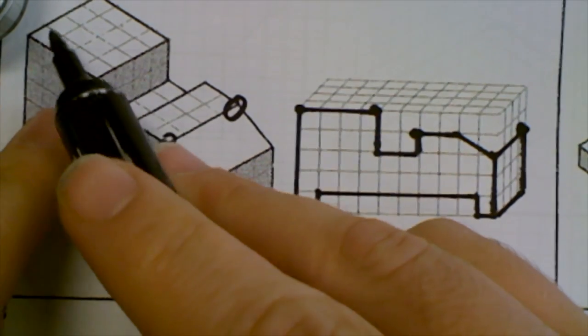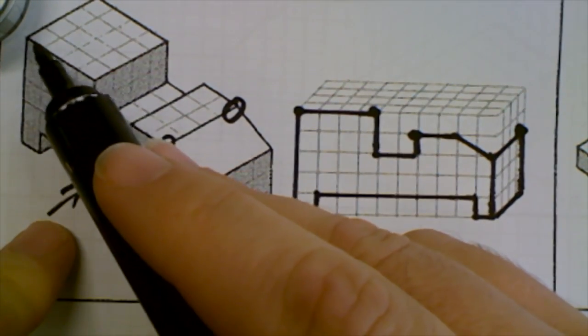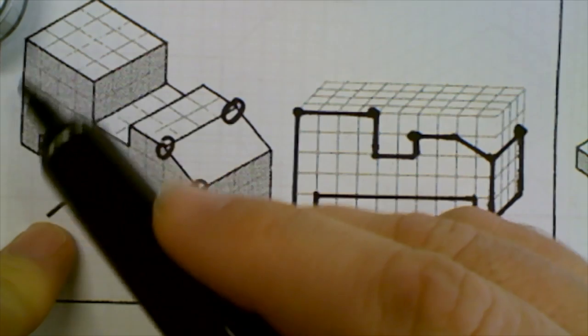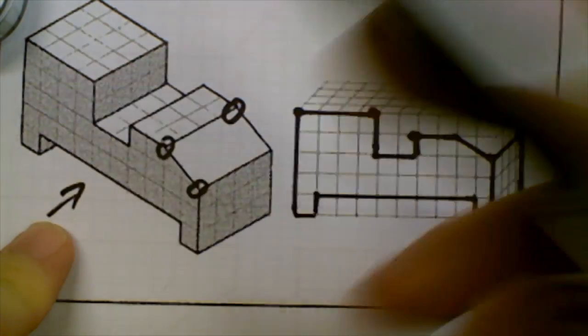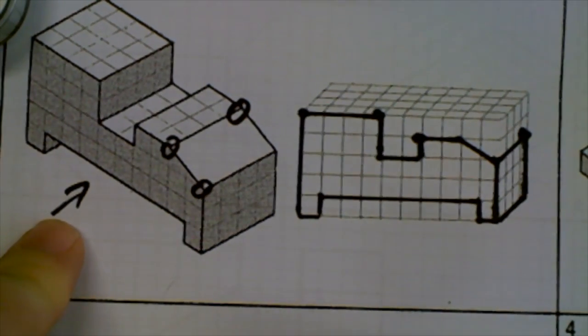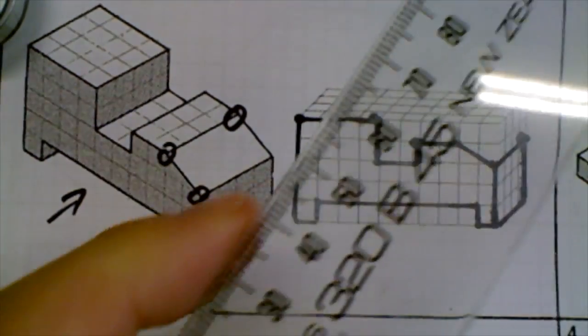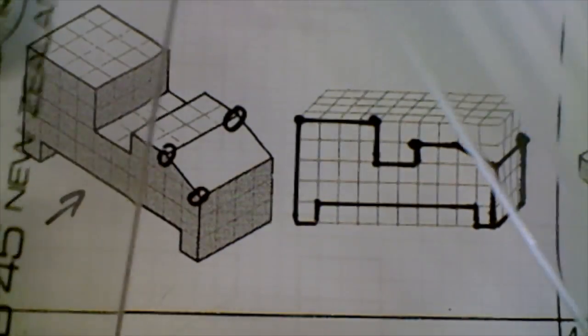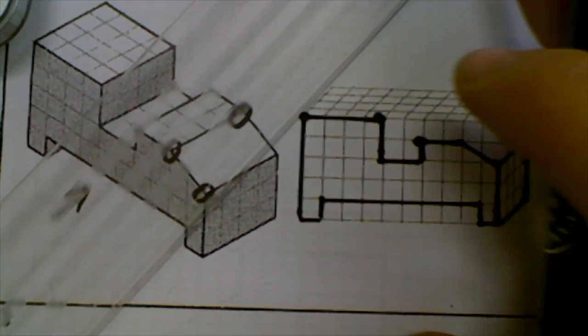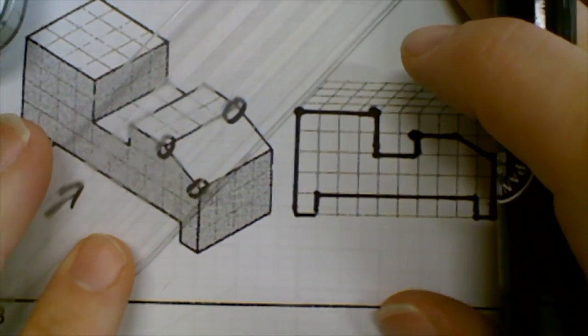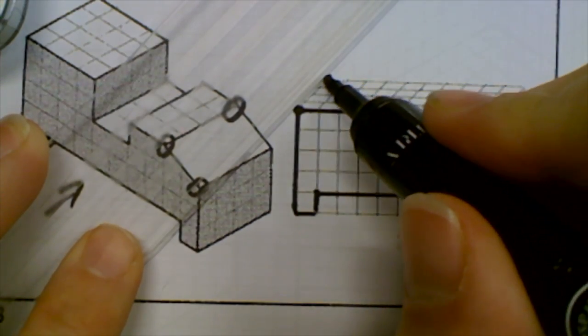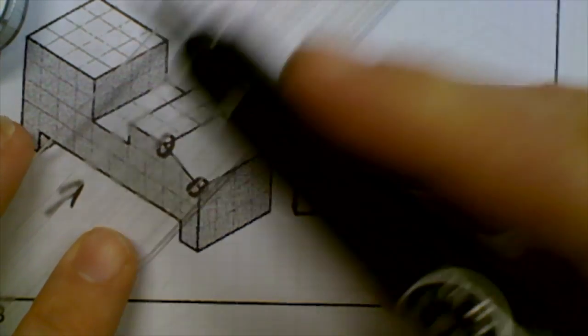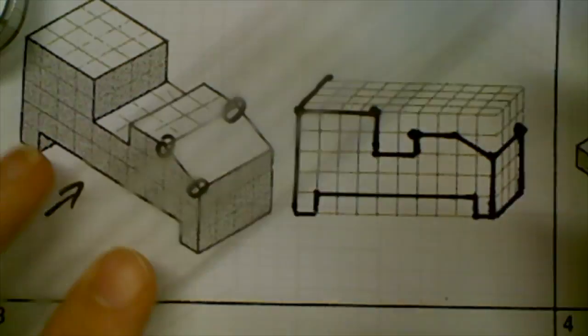This is going to be attached to this top bit here. So it's five blocks up, and one, two, three, four blocks across. I'm going to get my 45 degree set square, put it on a straight edge like so, and draw. It's one, two, three, four blocks across.